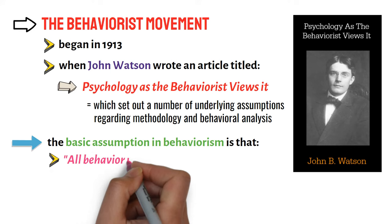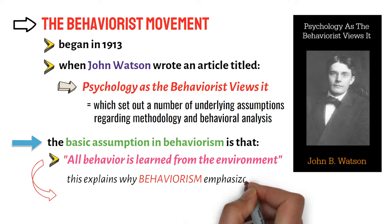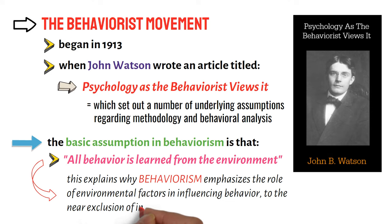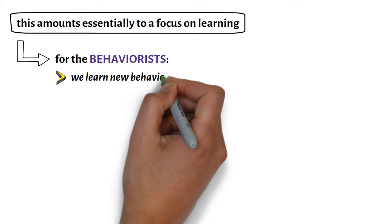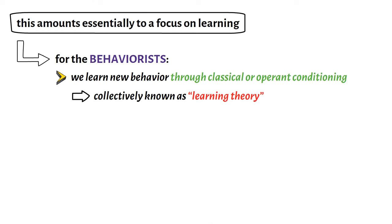The basic assumption in behaviorism is that all behavior is learned from the environment. This explains why behaviorism emphasizes the role of environmental factors in influencing behavior, to the near exclusion of innate or inherited factors. This amounts essentially to a focus on learning. Hence, for the behaviorists, we learn new behavior through classical or operant conditioning, collectively known as learning theory.